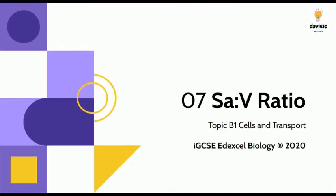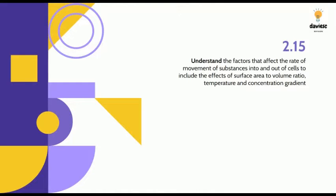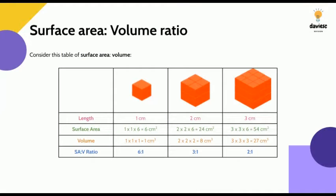We're going to look at surface area to volume ratio. This is a slightly more detailed and involved area of the topic, and more than just understanding surface area to volume ratio, we need to understand the effects on the rate of diffusion. That includes surface to volume ratio, temperature, and concentration gradient. So first let's have a look at surface area to volume ratio.